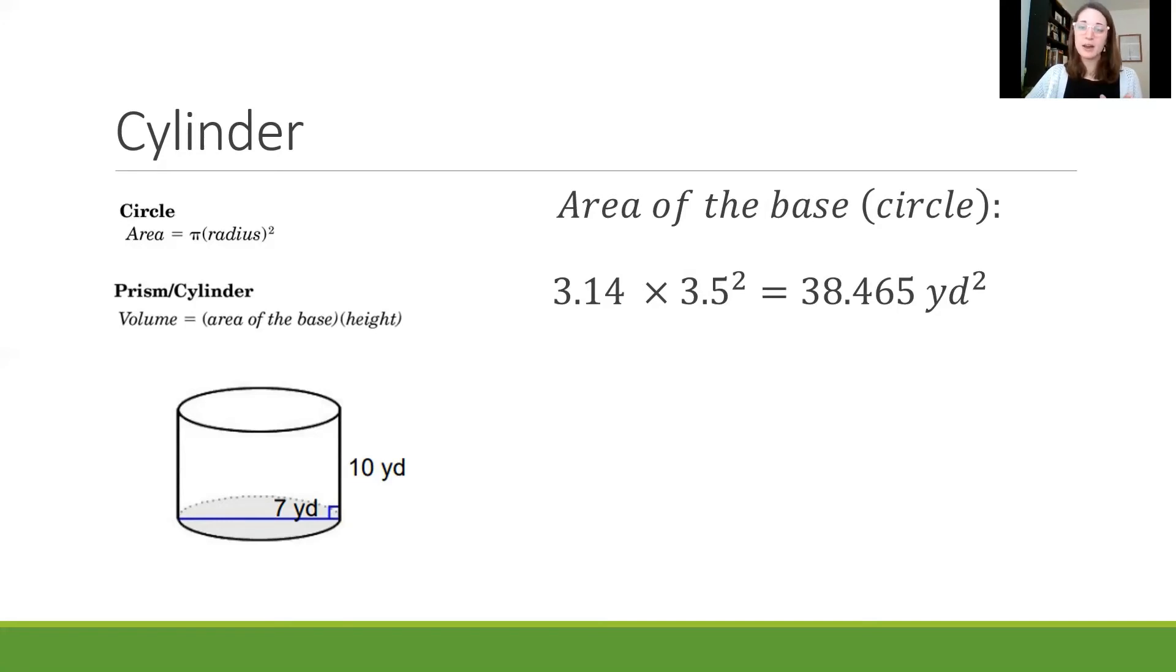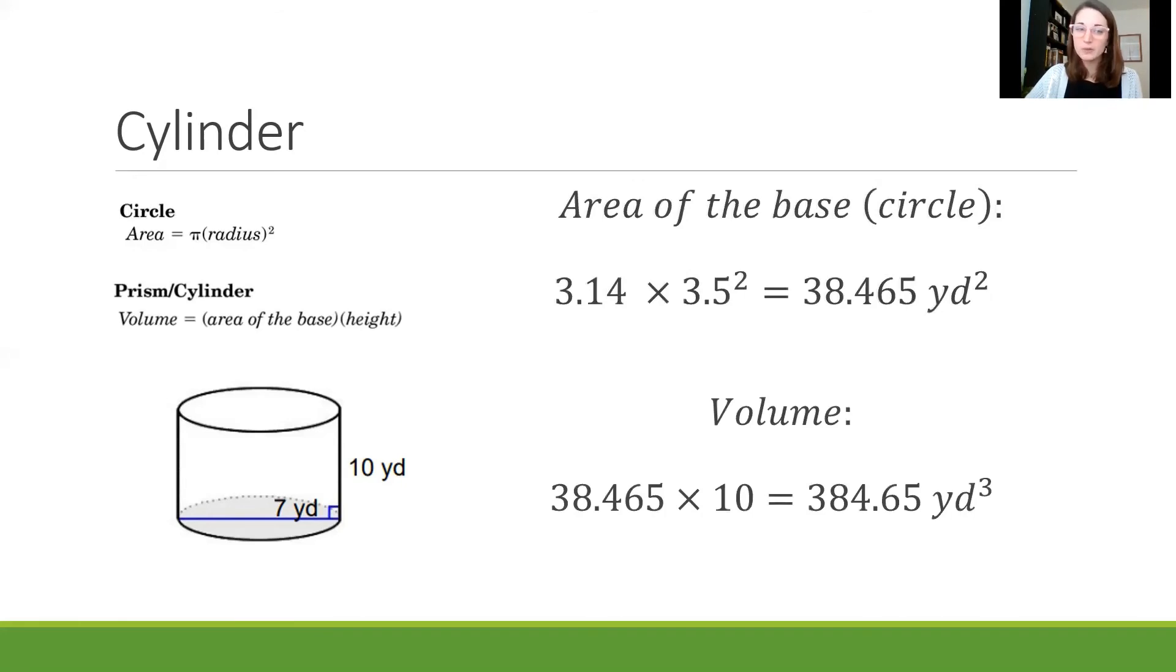So when I do 3.5 squared and multiply that by 3.14 the ultimate answer is 38.465 yards squared. Now that's just my area of my base. So now I need to plug that in to get my volume. So for the volume, the area of the base times the height, again 38.465 times 10 which is the height is 384.65 yards cubed. So again remember we're going to put that cubed there for the three-dimensional figure in volume.